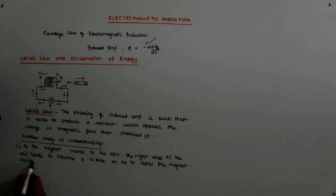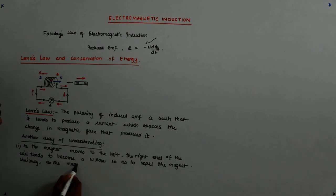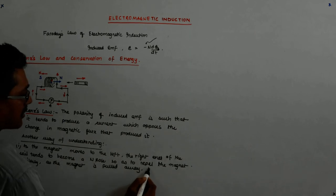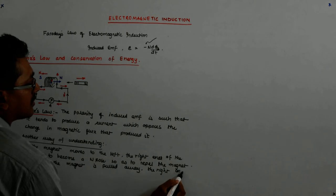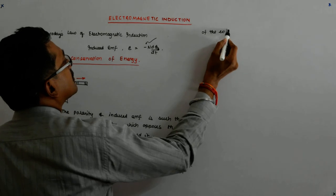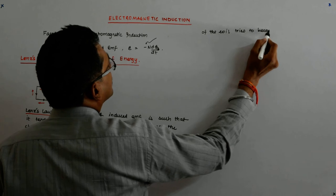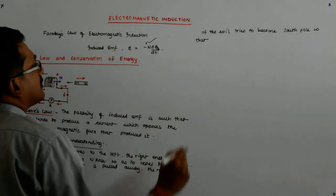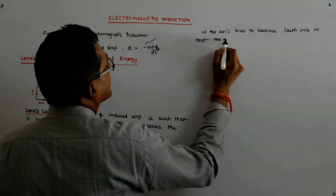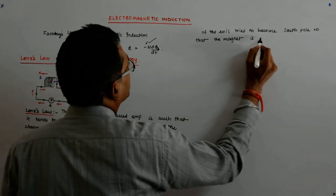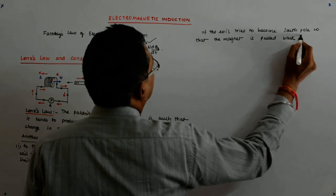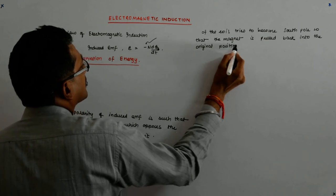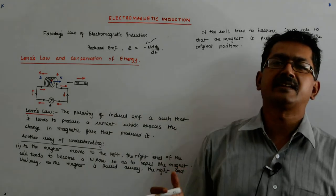Similarly, as the magnet is pulled away, the right end of the coil tries to become a south pole so that the magnet is pulled back into its original position. The whole aim of the system is to maintain the status quo.